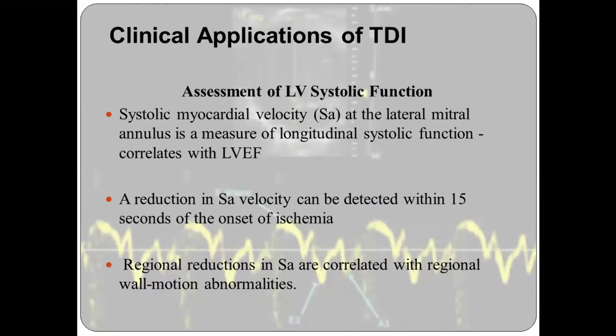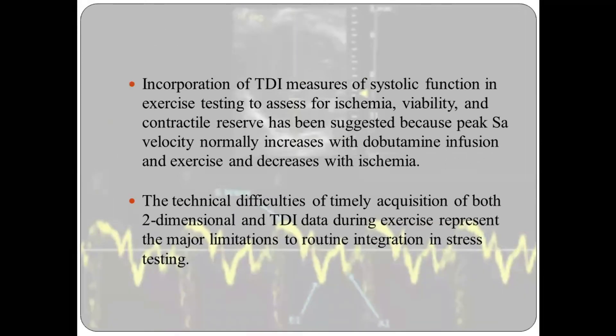The clinical applications of tissue Doppler: First, assessment of LV systolic function. The systolic myocardial velocity at the lateral mitral annulus is a measure of longitudinal systolic function and correlates well with LVEF. A reduction in systolic myocardial velocity can be detected within 15 minutes of the onset of ischemia. Regional reductions in systolic myocardial velocities are correlated with regional wall motion abnormalities. TDI measures of systolic function have been incorporated into exercise testing to assess for ischemia, viability, and contractile reserve, as peak systolic myocardial velocity normally increases with dobutamine infusion and exercise and decreases with ischemia. However, timely acquisition of 2D and TDI during exercise represents a major limitation.